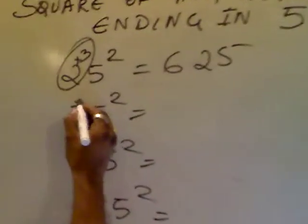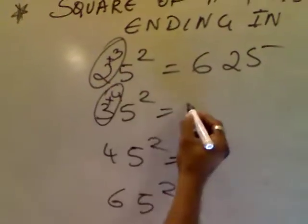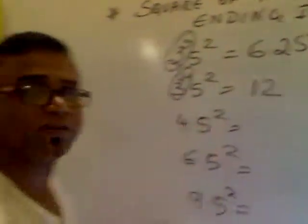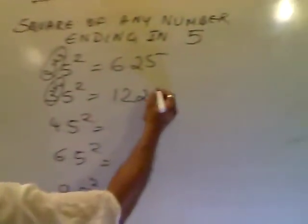After 3 comes 4. 3 multiplied by 4 is 12. 5 square is 25.